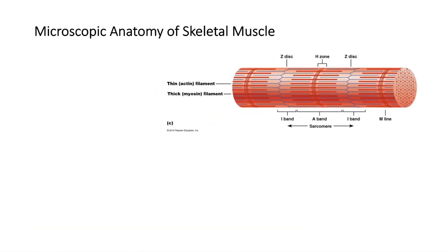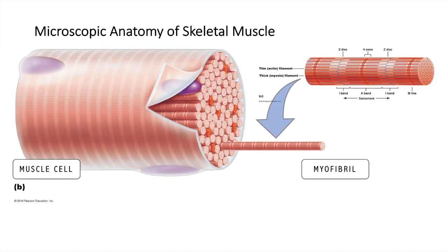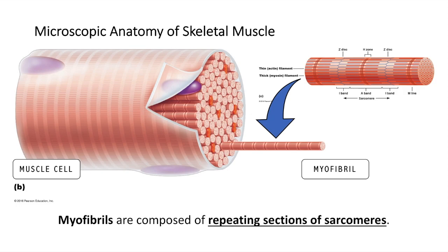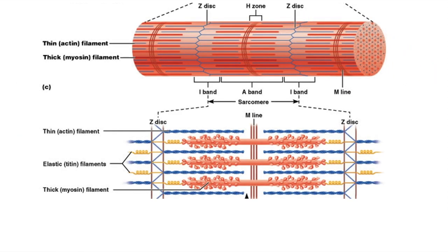Keep in mind that these myofilaments make up the myofibrils, the organelles of the muscle fibers. The myofibrils are composed of repeating sections of sarcomeres, perfectly lined up with one another within the cell. This allows for uniform contraction of the muscle. Going back to the zoomed-in section of the myofibril, we see that there are many bands, discs, zones, and lines within each sarcomere.